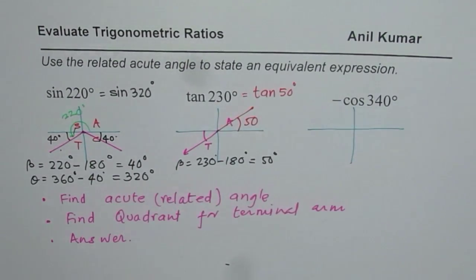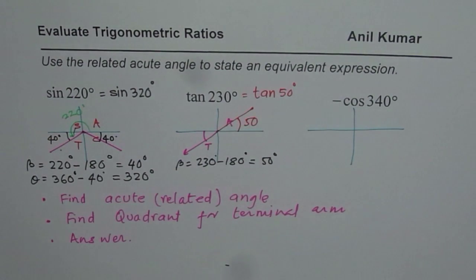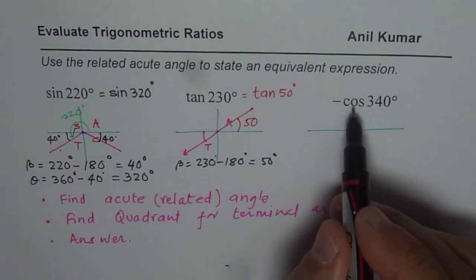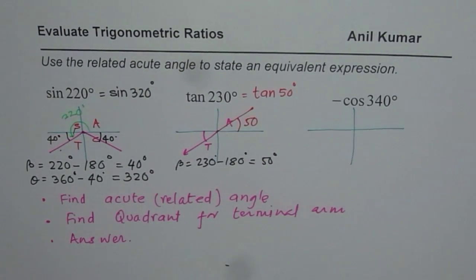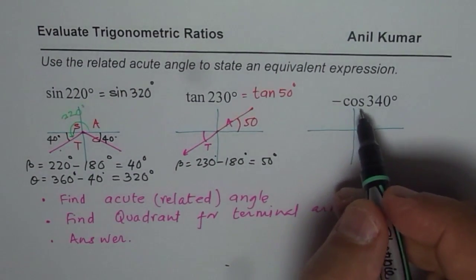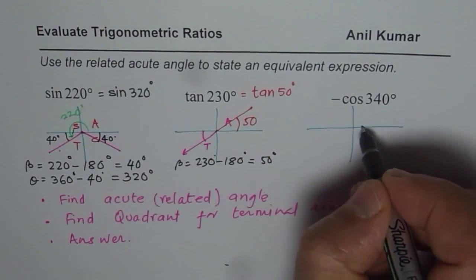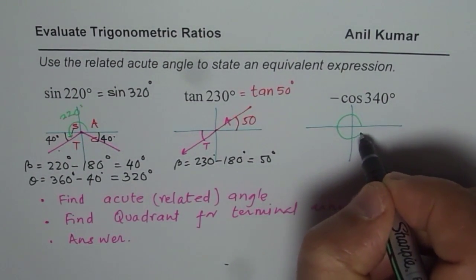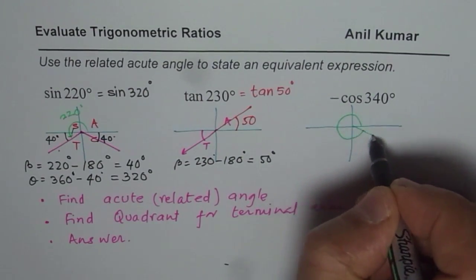So these are the two expressions which are equivalent. Tan 230 degrees and tan 50 degrees. Minus cos 340. It means what? Minus cos 340. 340 degrees is like we will go one full circle but less 20.